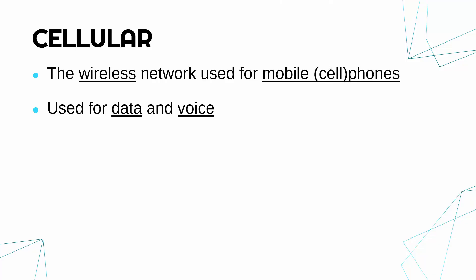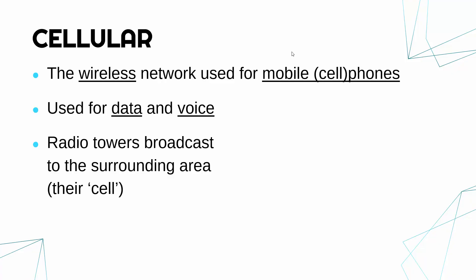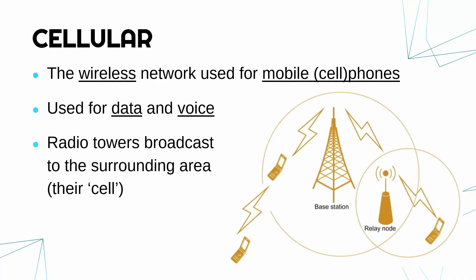This network can be used for both data and voice. PSTN can be used for data too if you are using ADSL, but primarily for voice in both cases. For data, you've got 4G and 5G nowadays, also on the same network. This network works by having radio towers which broadcast to the surrounding area. Each tower has got an area it's designed to broadcast to — that is what's called its cell. So the country is divided into cells, and each cell has got a tower broadcasting.